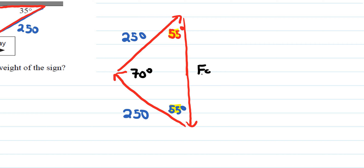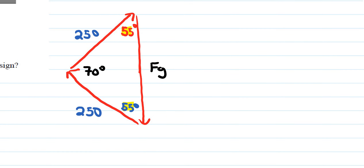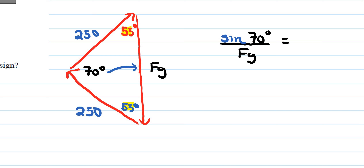Our goal is to find the weight of the sign, which is the force of gravity. Using the sine law: the 70-degree angle is opposite FG, so we write sine of 70 degrees divided by FG. That equals sine of 55 degrees divided by its opposite side, 250.